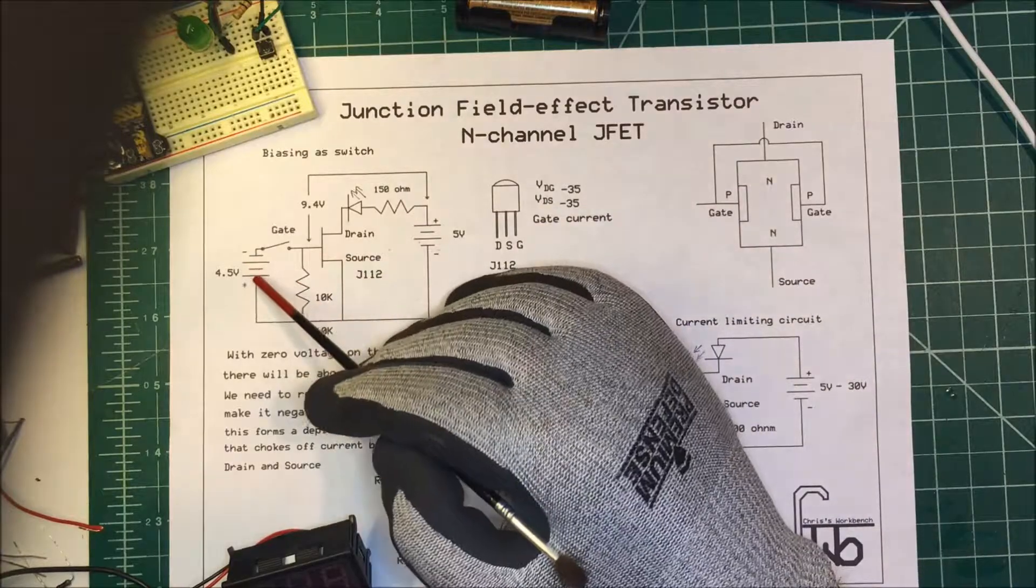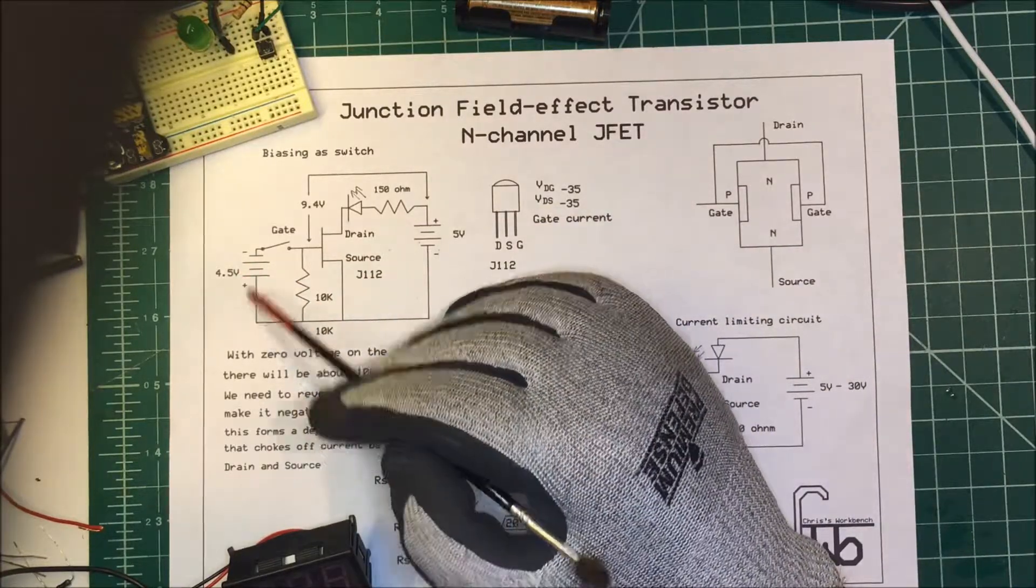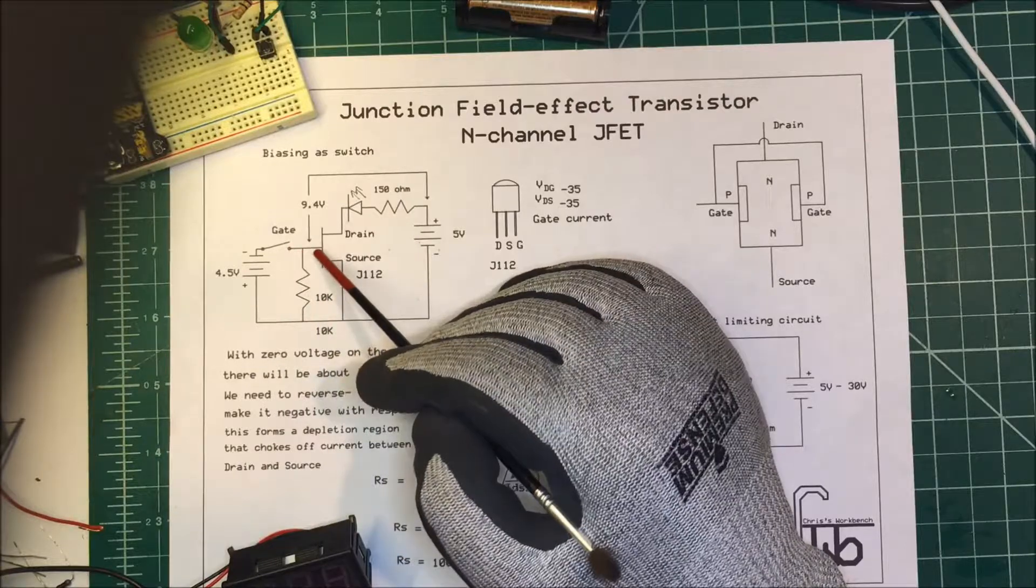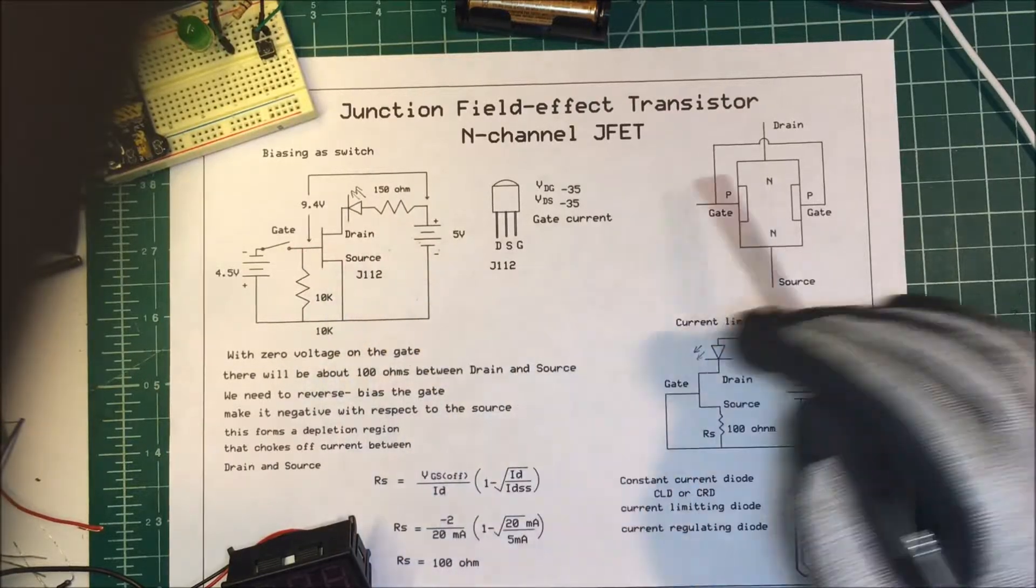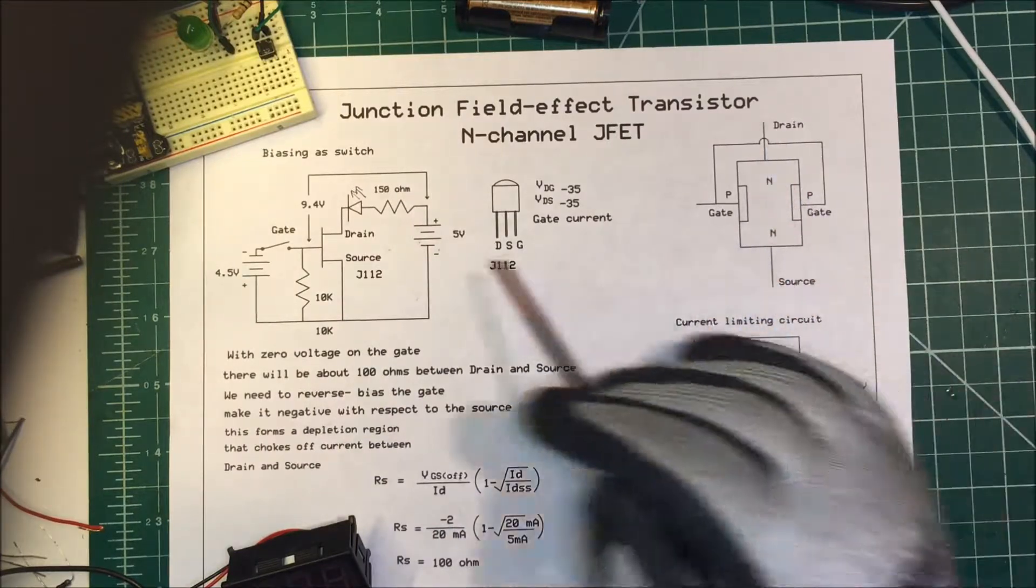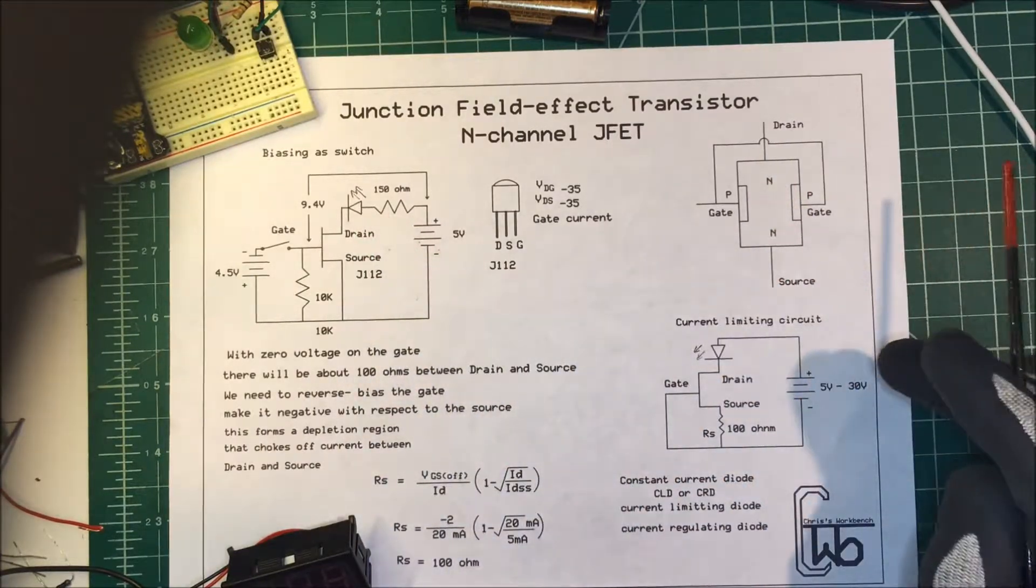I need to put a negative voltage on the gate. I have to reverse bias this gate here. I'm going to do that with the battery here. I have the positive here, negative up here, and when I turn the switch on, I'm going to put negative 4.5 volts onto the gate. It's going to form a depletion region in here, cutting off the current and turning off the LED.